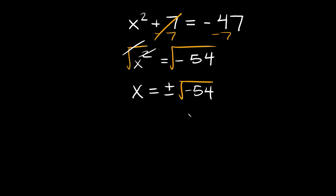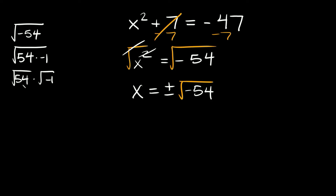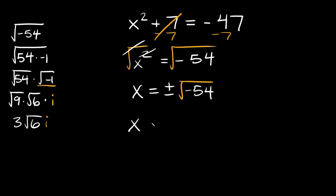Now 54 is not a perfect square, so we have to break this down. The square root of negative 54 — first, separate it as the square root of 54 times negative 1, then split them into their own radicals: square root of 54 times the square root of negative 1. We can break 54 down into 9 times 6, so this becomes the square root of 9 times the square root of 6 times the square root of negative 1, which is i. The square root of 9 is 3, and we can't simplify the square root of 6 further. So our answer is x equals plus or minus 3 root 6 i.